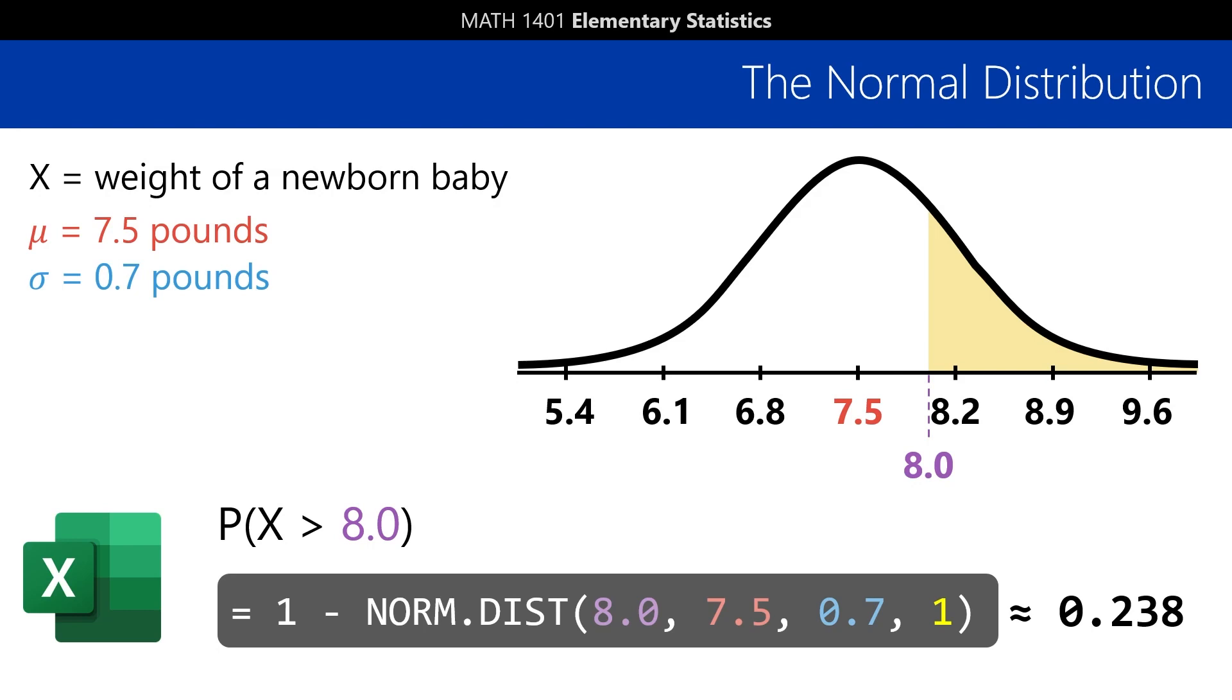And, based on what we said before, that's the same as the probability that a newborn weighs greater than or equal to 8 pounds. Again, the equal to doesn't really matter here.